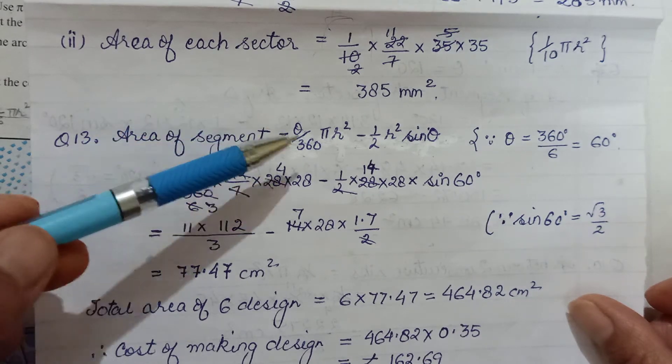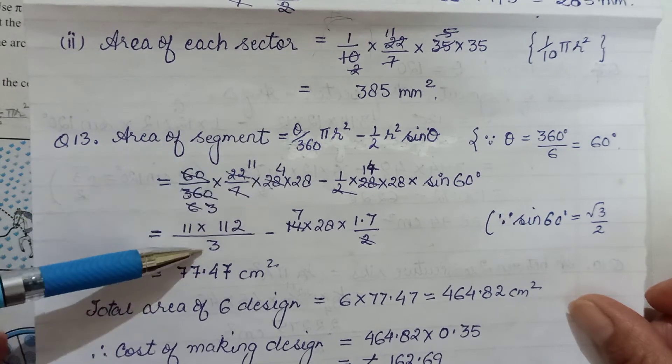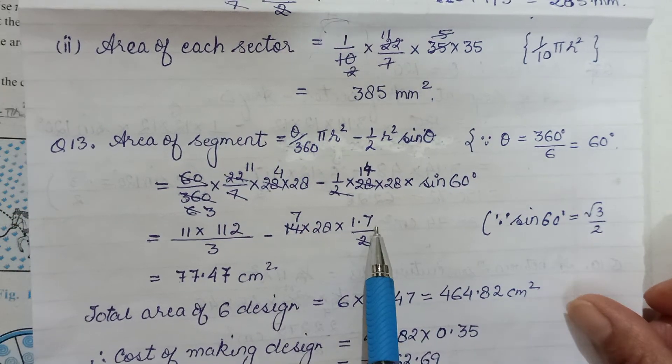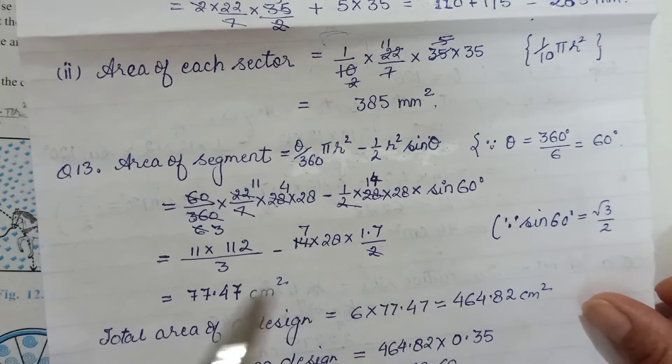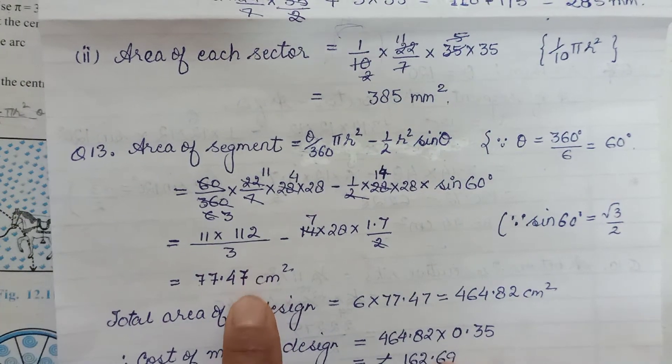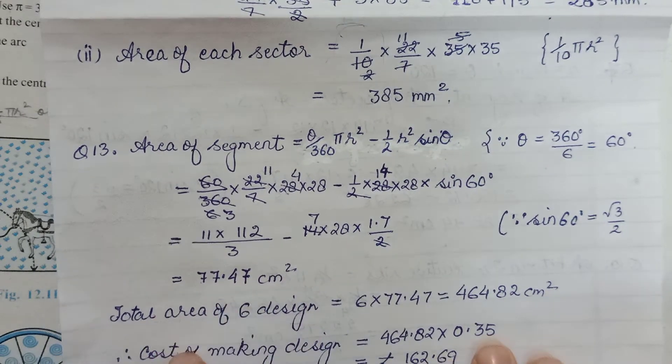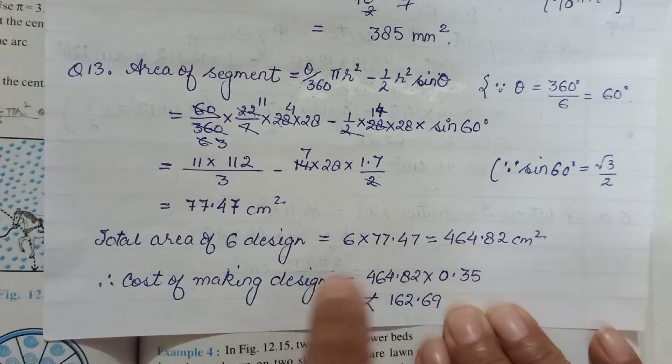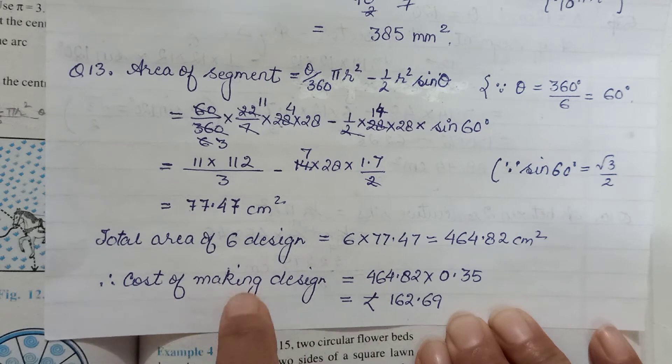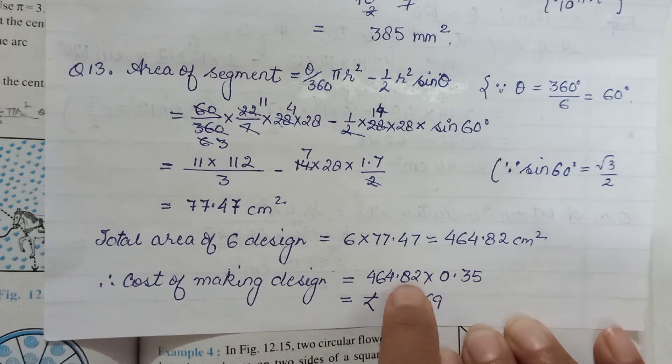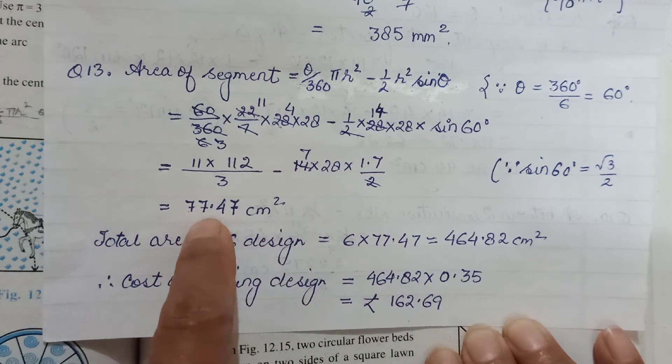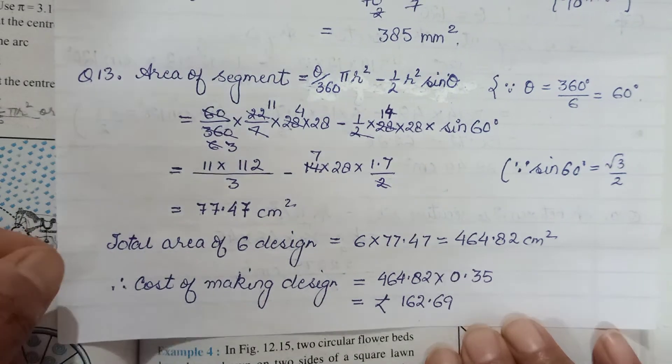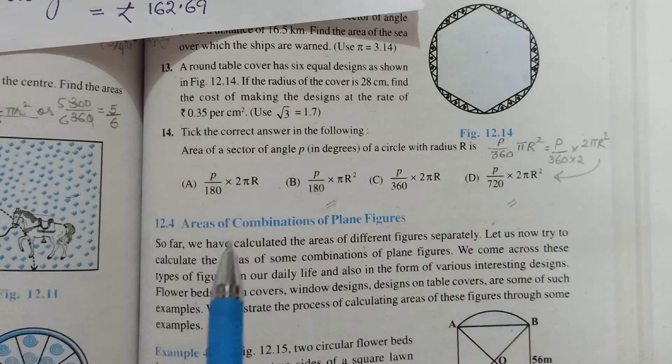Put θ/360 × πr² - these are all calculations - minus ½r² × sin 60°. Value of sin 60° is √3/2. They mentioned take √3 as 1.73. Put the values, do your calculation and get area of one segment. We had six such designs, so multiply by 6 to get area of six designs. To find cost of the whole design, multiply rate by area of six designs. This was the rate given, so rate × area of six designs. Just some calculations to understand.